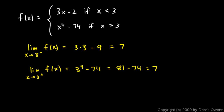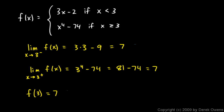We should also note the value of the function at x = 3. Since x ≥ 3 applies when x equals 3, we compute 3⁴ - 74 = 7. So the left and right limits both exist, and they are equal to the value of the function at that point. Therefore the function is continuous.